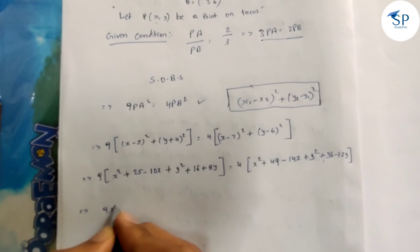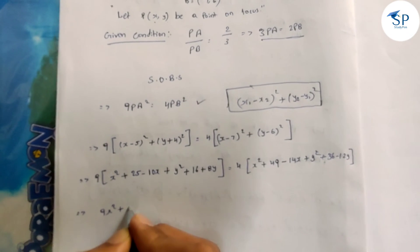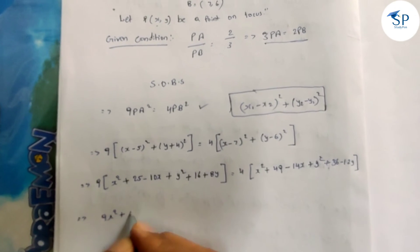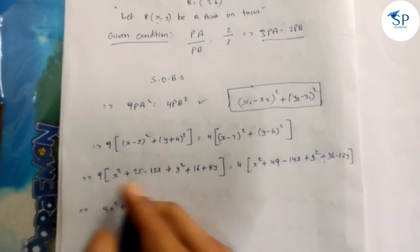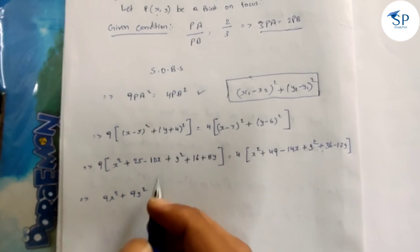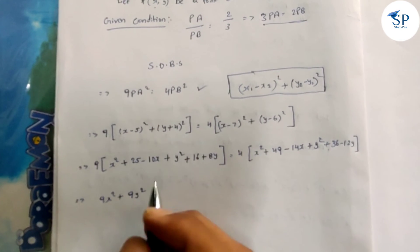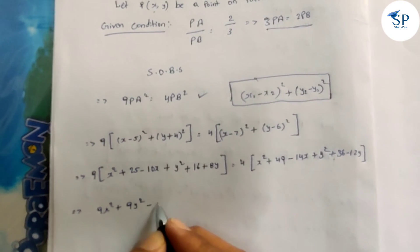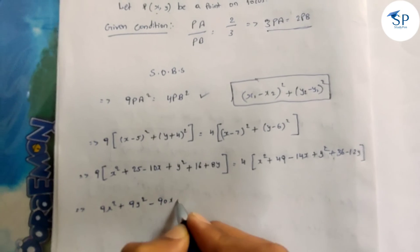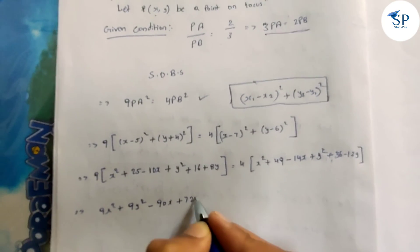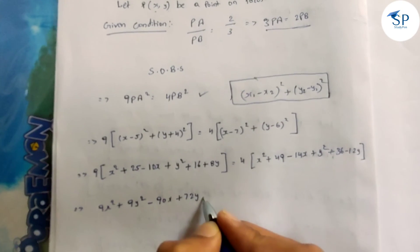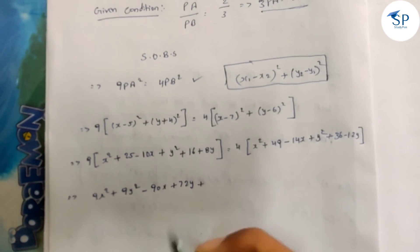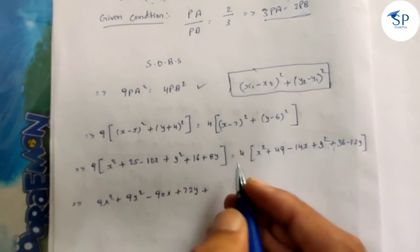Multiplying out the left side: 9x² + 9y² - 90x + 72y + 225 + 144, giving constant 369.